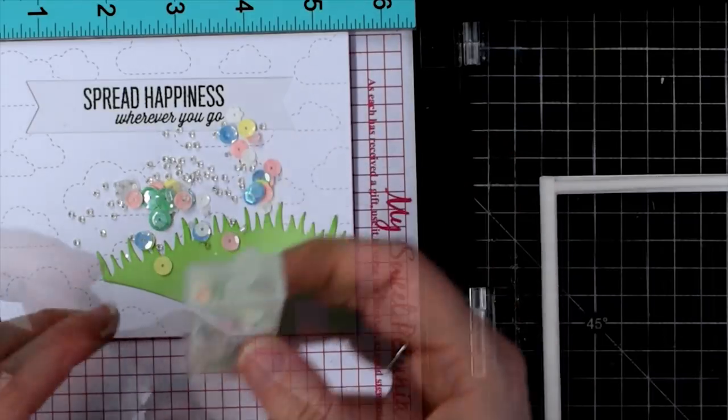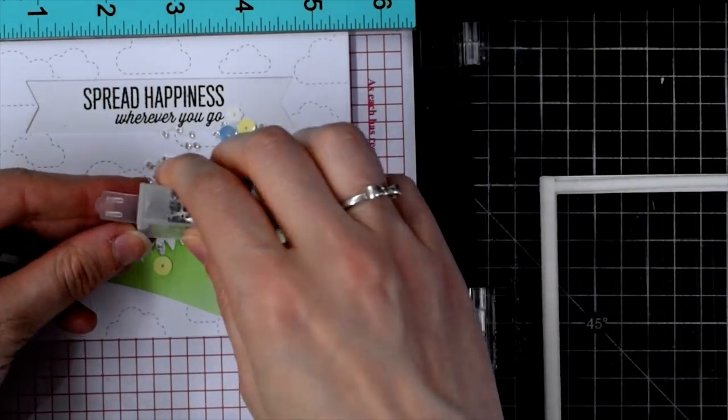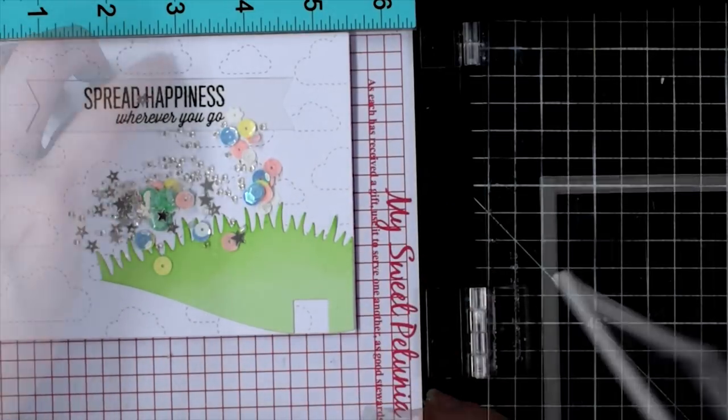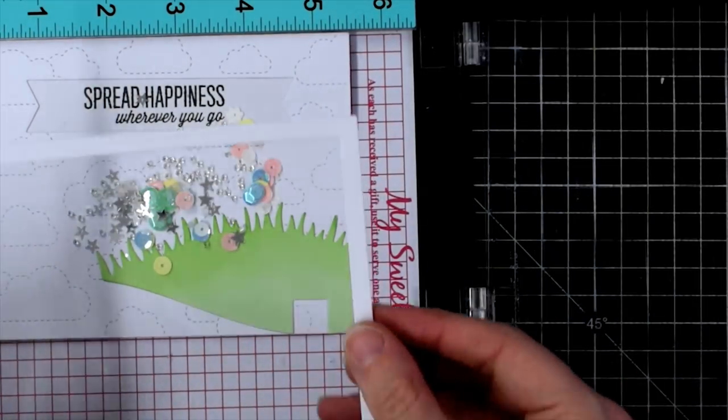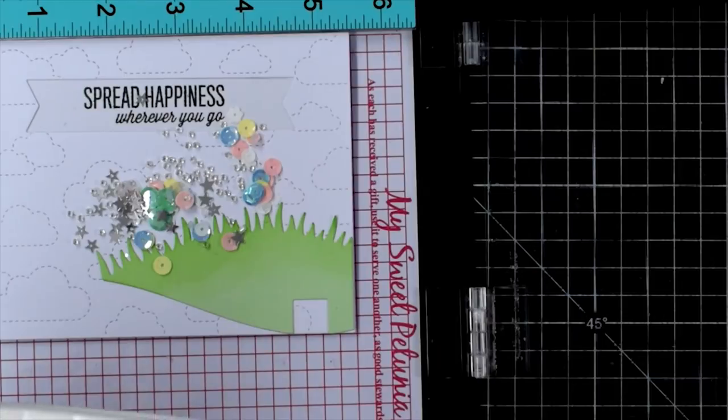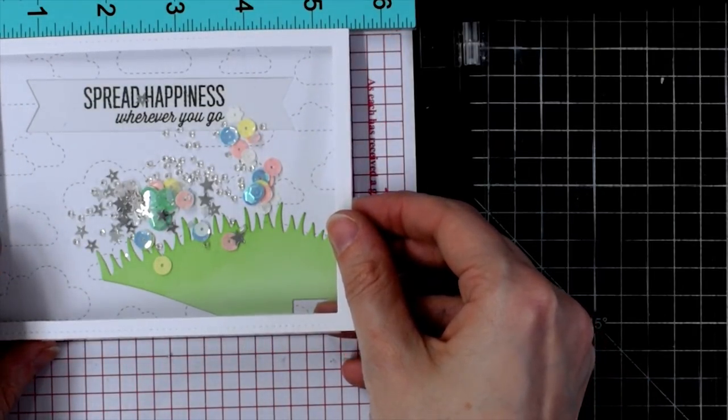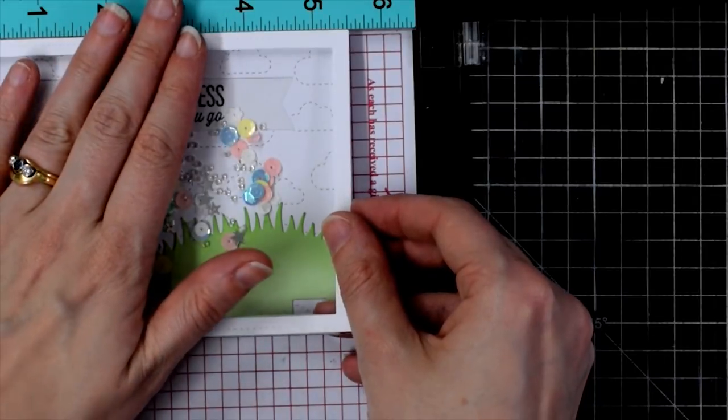For my shaky bits I'm using some clear seed beads, also some silver stars and some of this beautiful colored sequin mix from Lucy's Little Things. I'll also use my MISTI to help me get my frame perfectly positioned right on top.